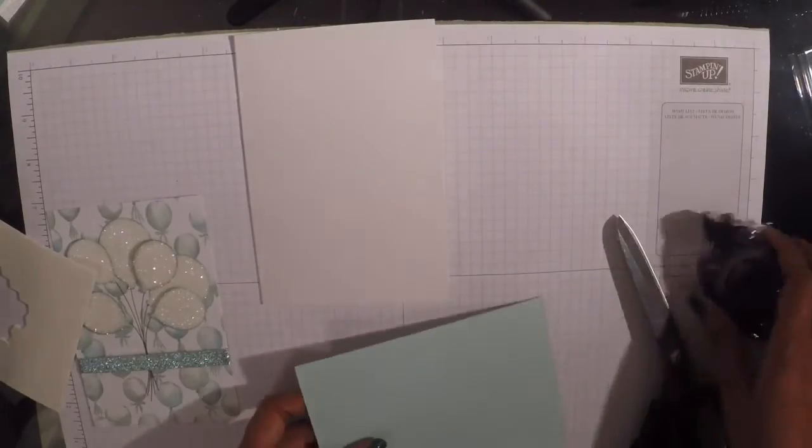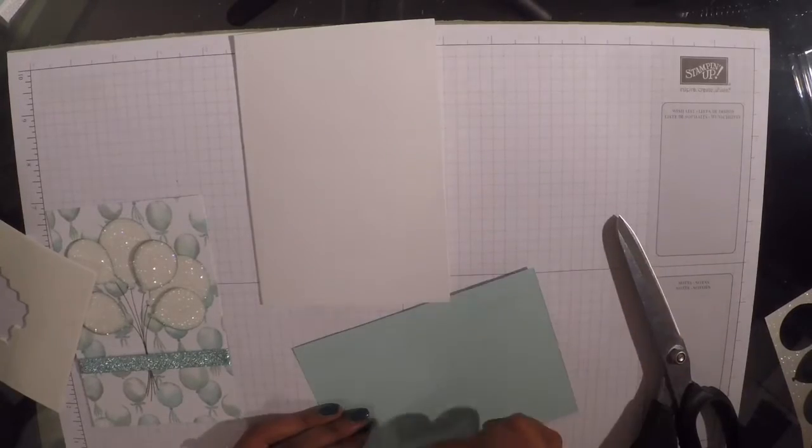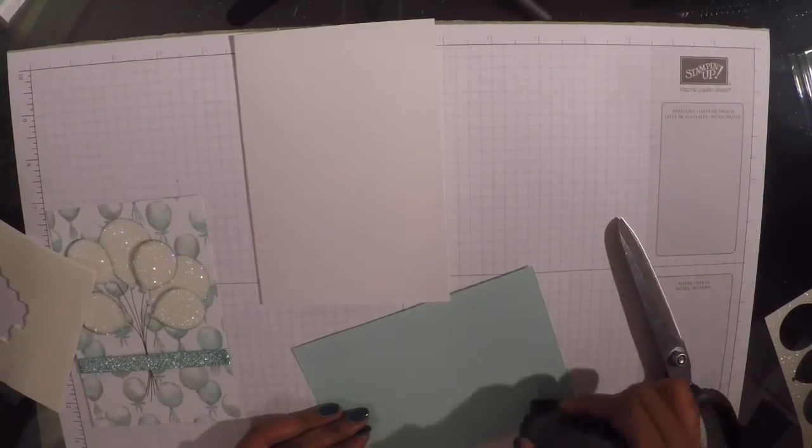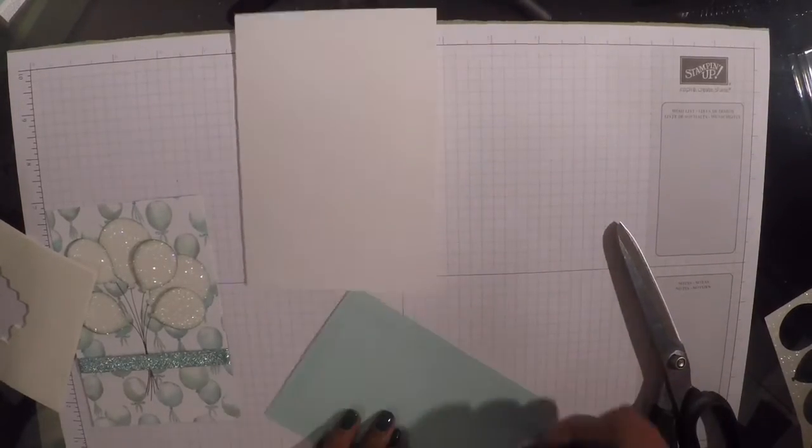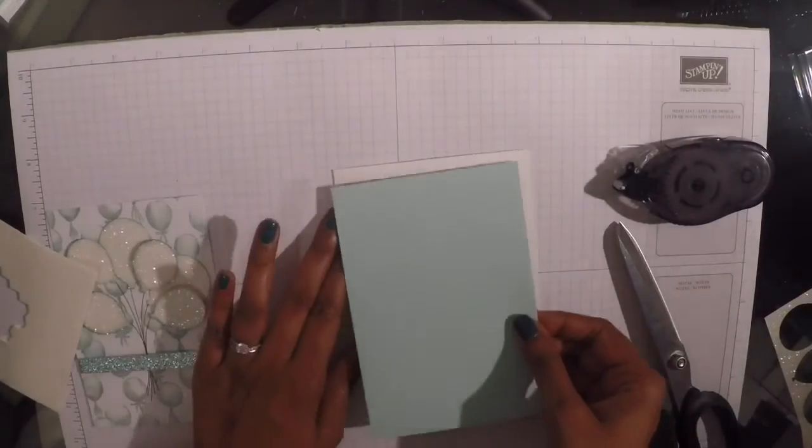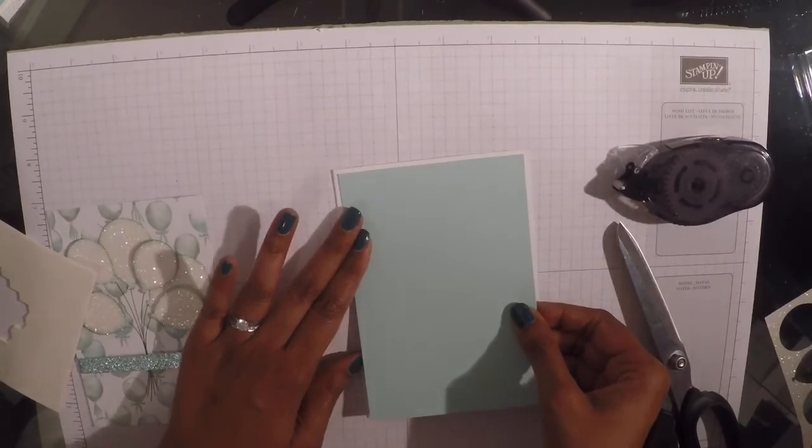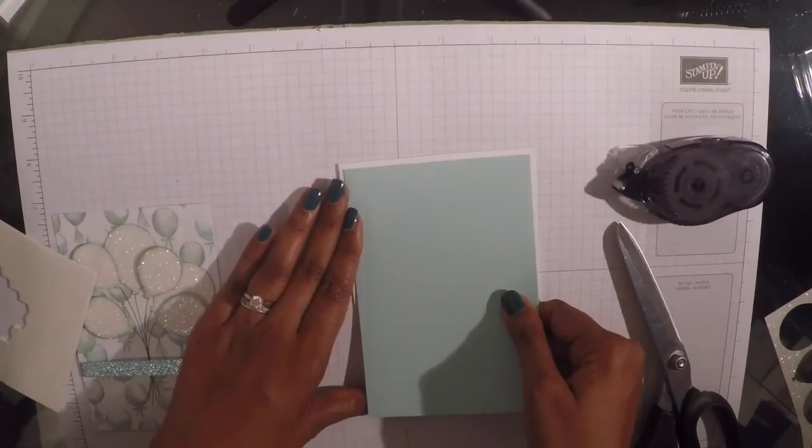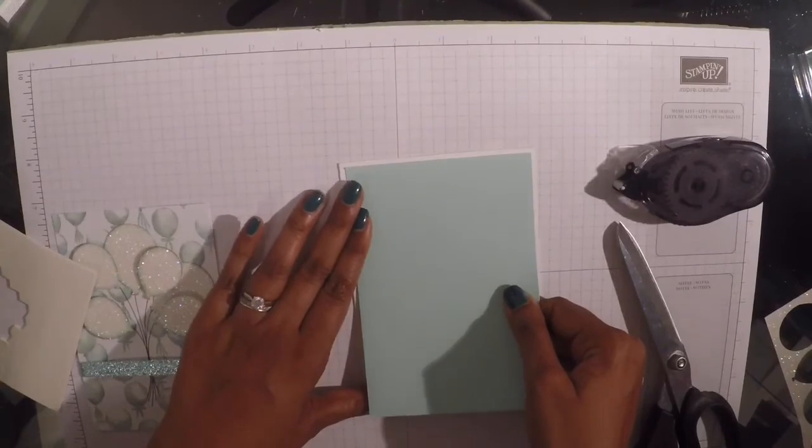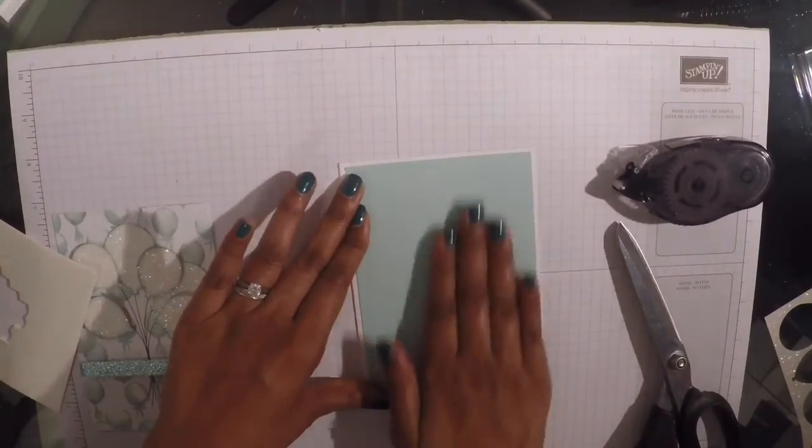And then I'm going to start layering up my cardstock. So I've got my base. I'm going to just attach my Pool Party layer, this layer. Make sure you've got a nice even border all the way around.